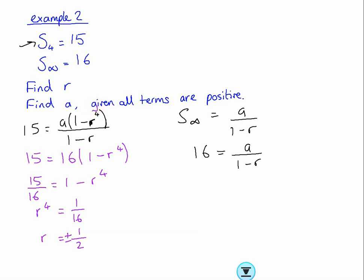Now given all terms are positive, what that tells me is r must be equal to a half, not a minus a half. Because if I start having a common ratio that's negative, I'm going to get terms that are negative. The fact that all terms are positive, I don't have to worry about the negative.